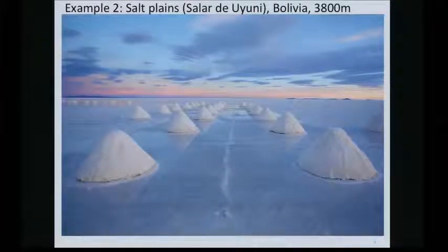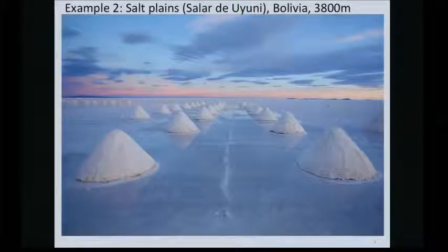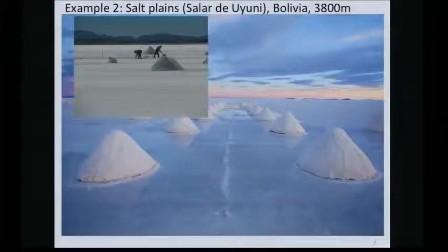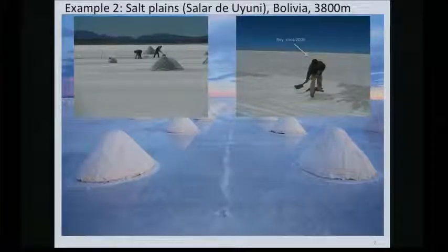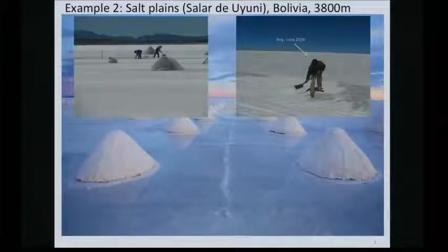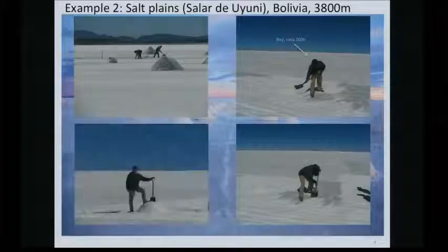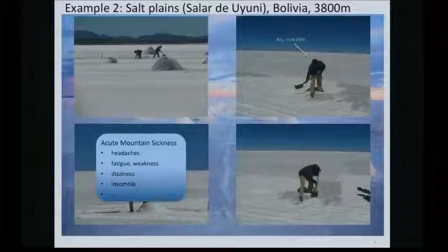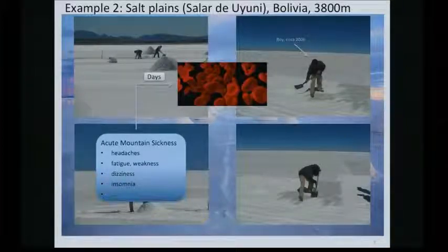The second example is about humans living in hypoxic conditions up at high altitudes. This particular place is just where my student who did most of the work happened to visit — these are salt fields in Bolivia. He tried making a pile of salt, being young and foolish as he told me, and then very soon fell sick with acute mountain sickness, and it took him a couple of days to recover. He coped by increasing the red blood count in his cells so that he would have enough oxygen.